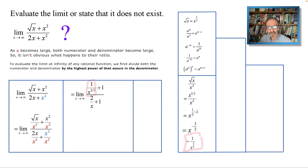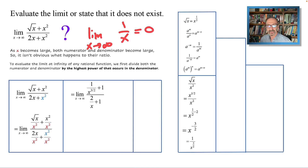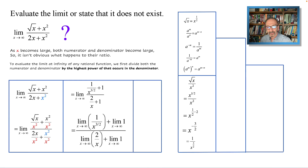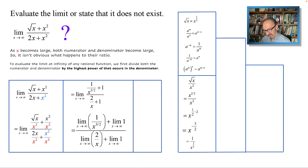That part we worked out on the side simplifies to 1 over X to the 3/2. A key fact we use now is: the limit as X approaches infinity of 1 over X is 0. Applying the limit to each part in the numerator and denominator: the limit of 1 is just 1, the limit of 2 over X as X approaches infinity goes to 0, and the limit of 1 over X to the 3/2 also goes to 0. So we have 0 plus 1 over 0 plus 1, which equals 1.